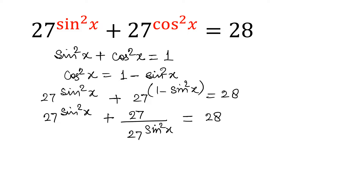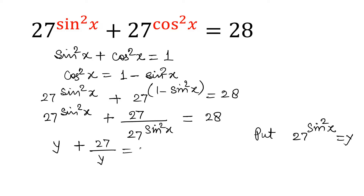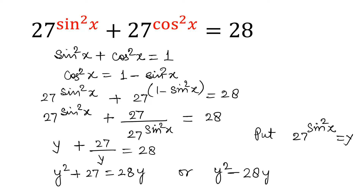Now I am going to substitute y = 27^(sin²x). So the equation converts into y + 27/y = 28. Multiplying through, that means y² + 27 = 28y.